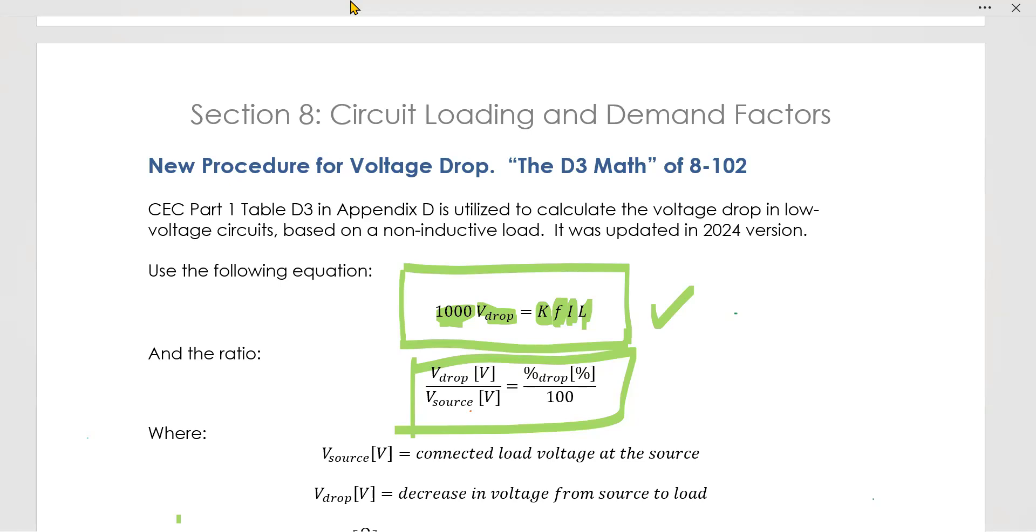This calculation for voltage drop, the D3 math I like to call it of 8-102, is not difficult at all. You're just finding factors and you're subbing into this equation. I hope that's helpful for you. Let me know if you want some example problems. The example problems bring a lot of clarity and they're not so hard at all.